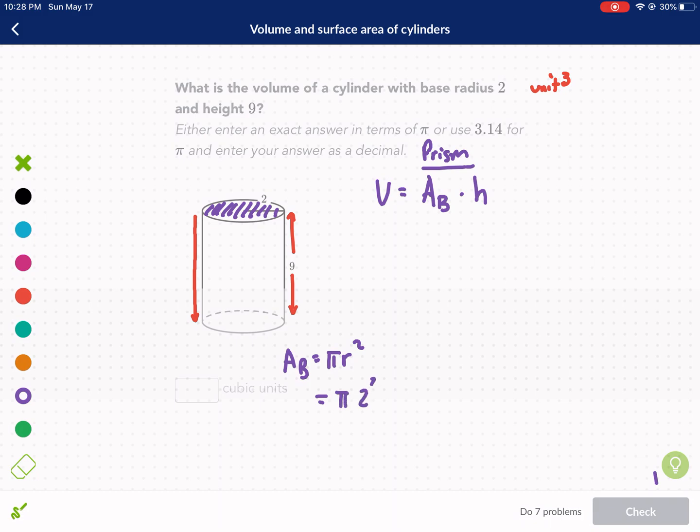Now we're just going to input our value, so we have π times 2 squared. We do order of operations to do 2 squared, which is 4, and then multiply that by π.